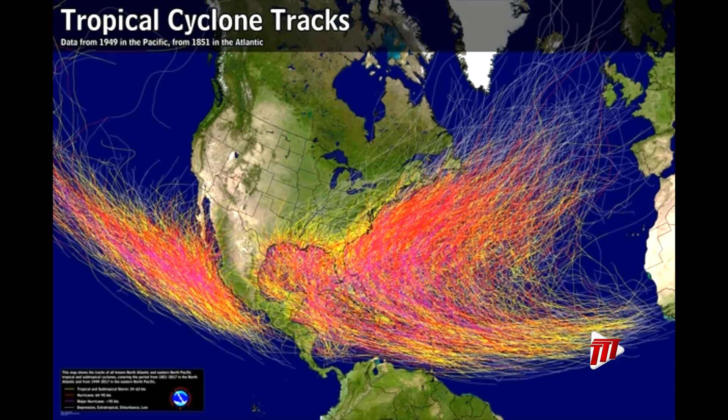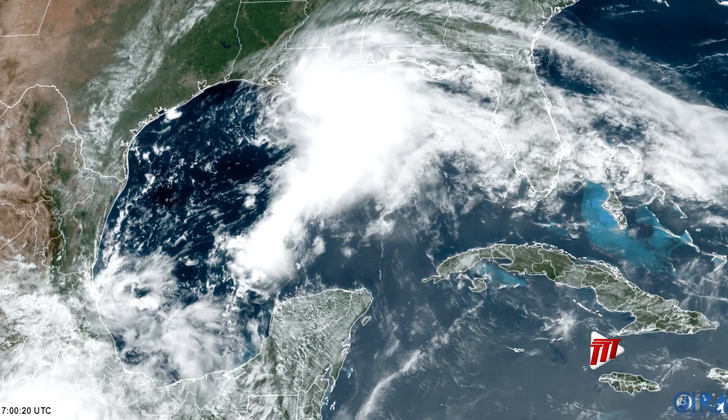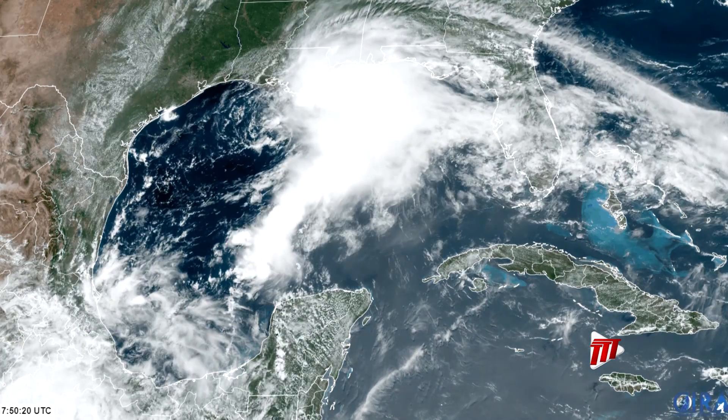Approximately six out of ten tropical cyclones originate from tropical waves. A tropical cyclone is a rapidly rotating storm system originating over tropical or subtropical waters, with organised deep convection circulation and a closed surface wind circulation about a well-defined centre. It is characterised by strong winds and thunderstorms that produce heavy rains and or squalls.